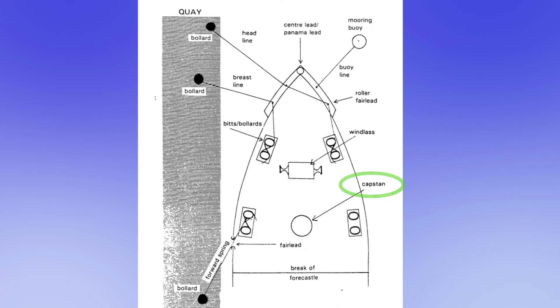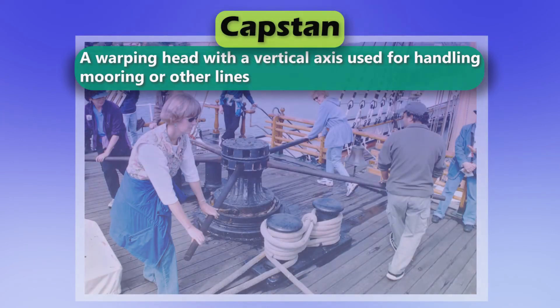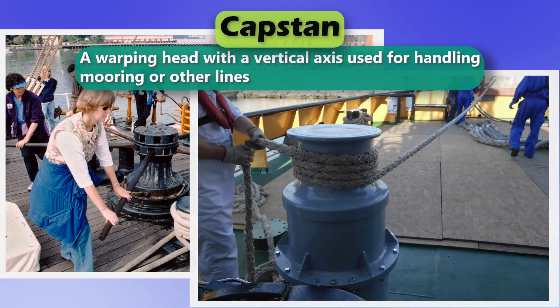Capstan. A warping head with a vertical axis used for handling mooring or other lines.